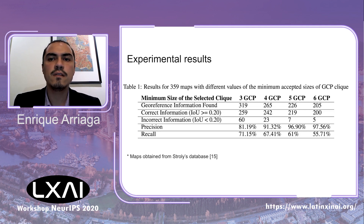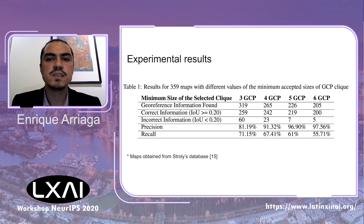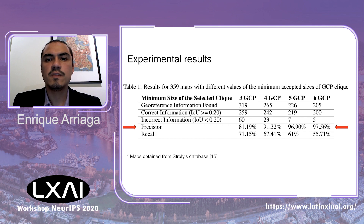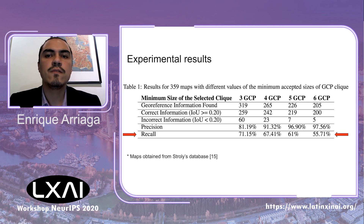In this table, we can see the results of executing the method four times, each time changing one of the main hyperparameters: the minimum accepted size of the clique of GCPs to be considered a successful one. We can see a trade-off between precision and recall. As we increase the size, precision grows from 81 to almost 98%, but at the same time, recall decreases from 71 to only 55%.